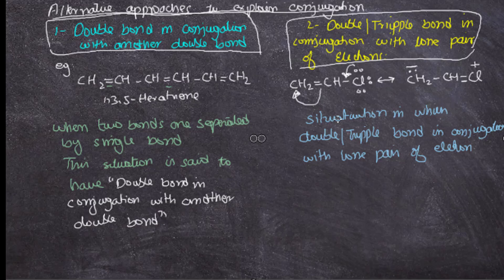Here you can see an example: 1,3,5-hexatriene. This is double bond in conjugation with another double bond. First comes double bond, then single bond, then double bond, then single bond, then double bond. So it's fulfilling the situation that is double bond in conjugation with another double bond. When two bonds are separated by a single bond, this situation is said to have double bond in conjugation with another double bond.